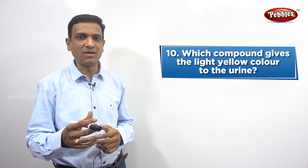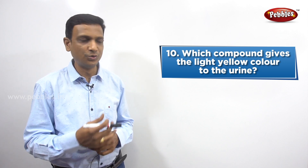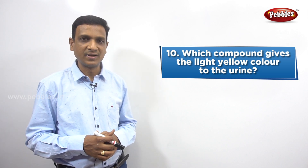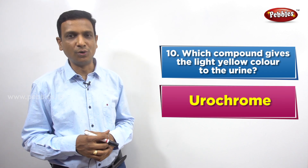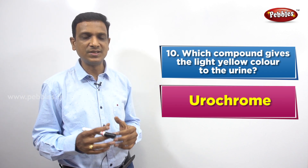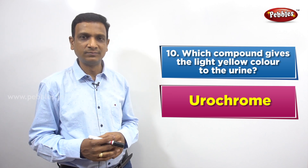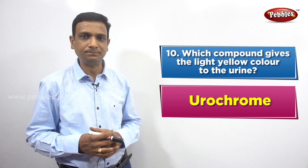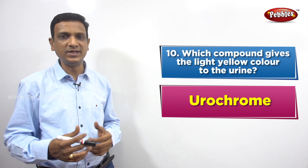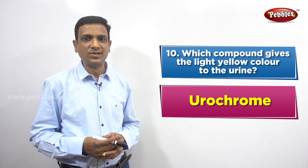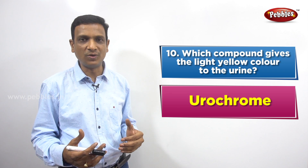From where does this compound come, and what is its source? The answer is that the pale yellow color is due to a pigment called Urochrome. It is because of the presence of Urochrome that urine has that light yellow color. Urochrome comes from a substance called hemoglobin.